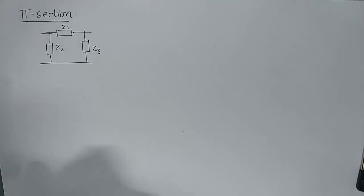The second most important type of two-port network configuration is the π-section and the π-section essentially looks like this.